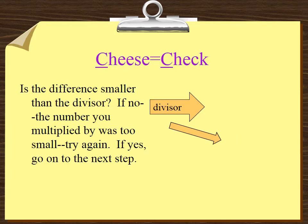Is the difference smaller than the divisor? Cheese equals check. If no, the number you multiplied was too small—try again. If yes, go on to the next step. So if we look at our problem, 1 is smaller than 8, which is our divisor. So our check checks out, and we can move on.